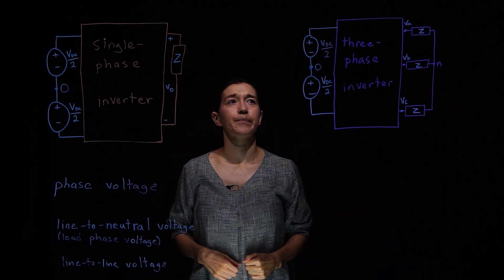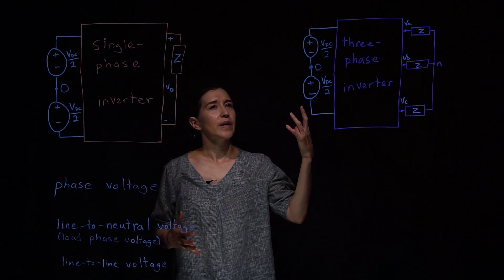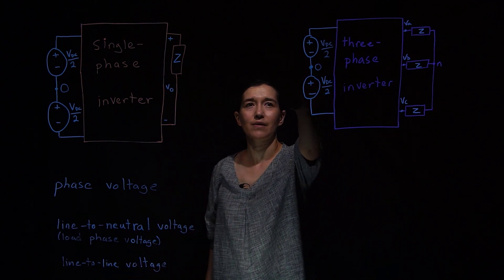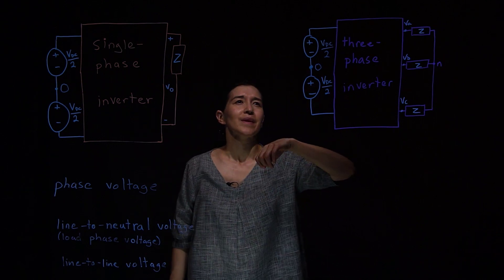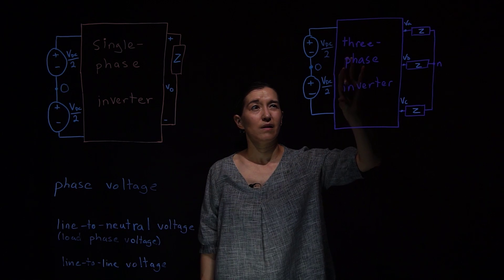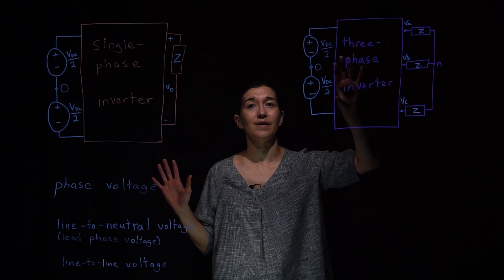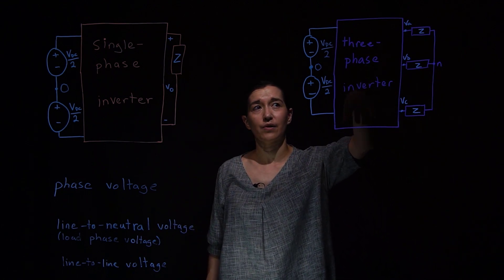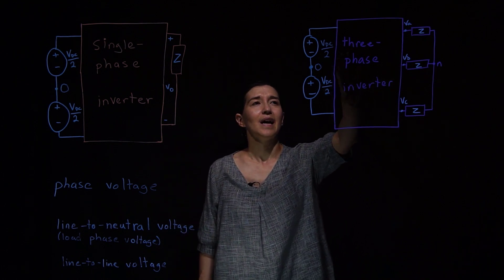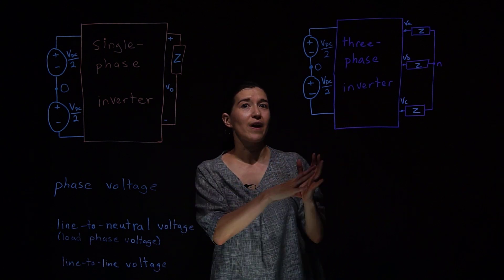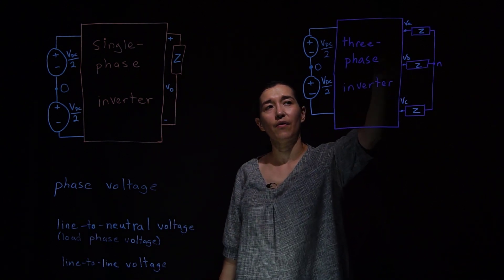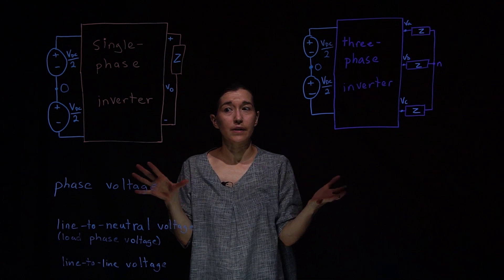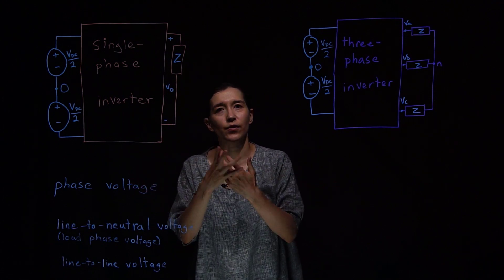The three-phase inverter is a little more complicated. We still have a single DC input on the source side, but the three-phase inverter creates three different output voltages in AC. We have three different output terminals labeled VA, VB, and VC, and those go to the three-phase output. Here we show them all connected to a neutral point. Next we'll get into what is actually inside these types of inverters, but first we should define some terms.